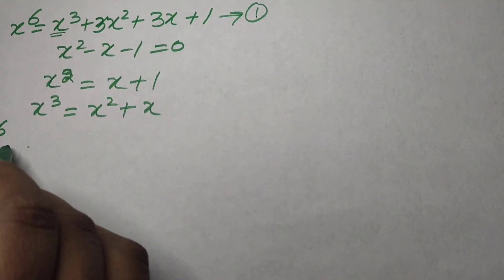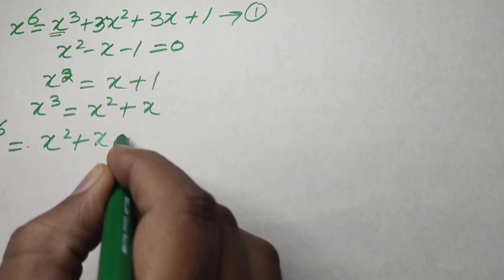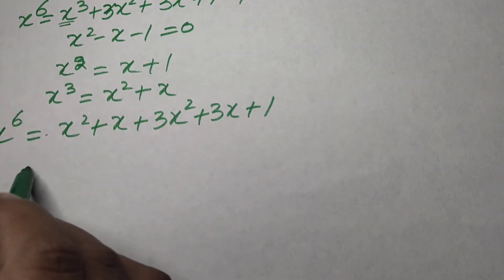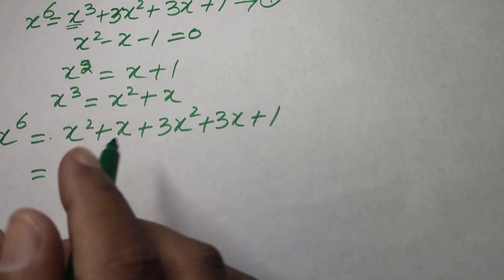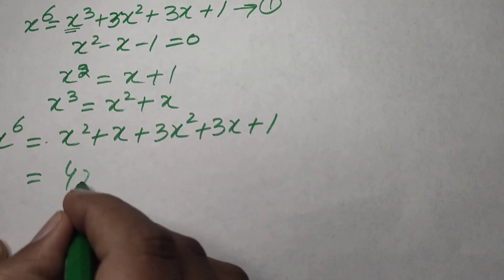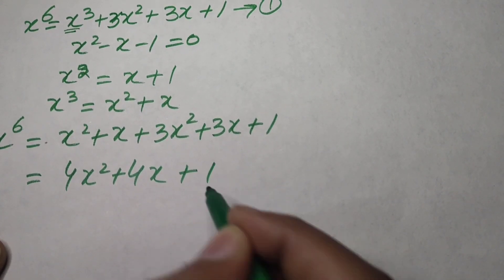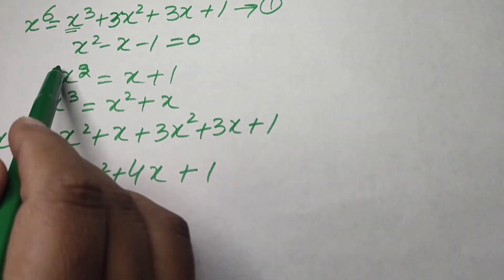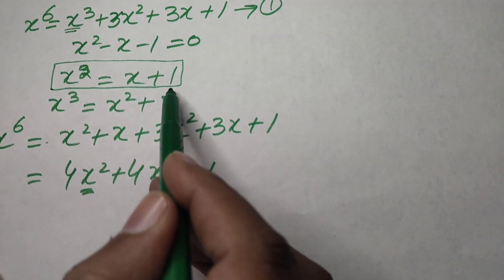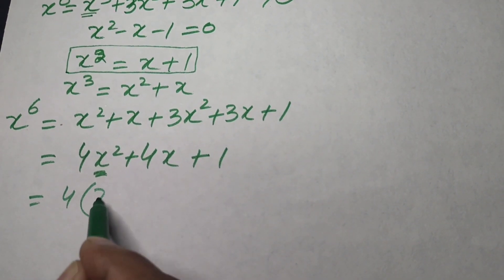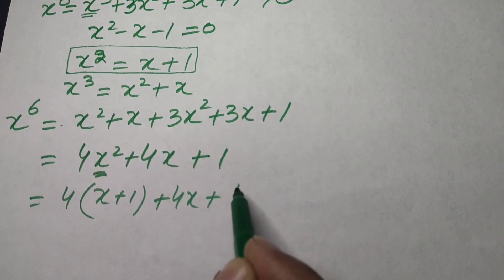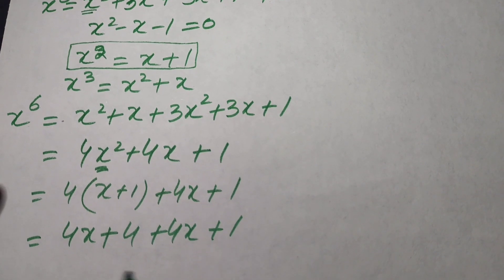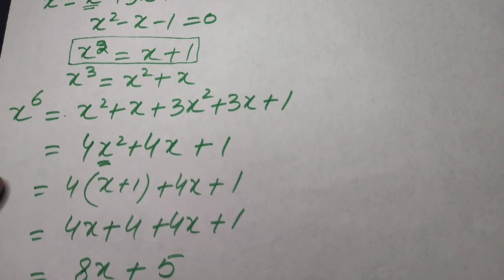Substituting x³ into equation (1), we get x⁶ = (x² + x)² expanded as x² + x + 3x² + 3x + 1. Collecting like terms gives 4x² + 4x + 1. We then substitute x² = x + 1 again to get 4(x + 1) + 4x + 1, which expands to 4x + 4 + 4x + 1, giving us 8x + 5.